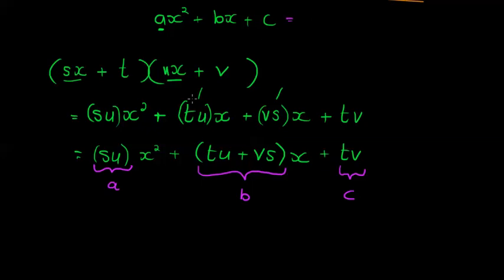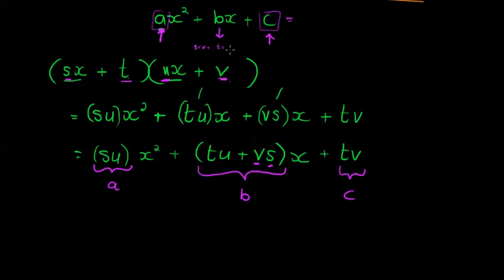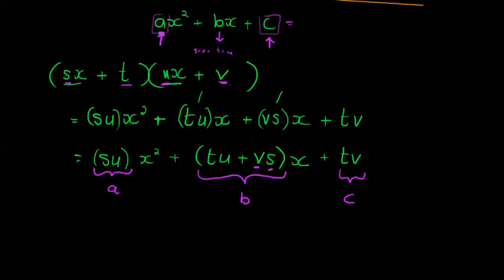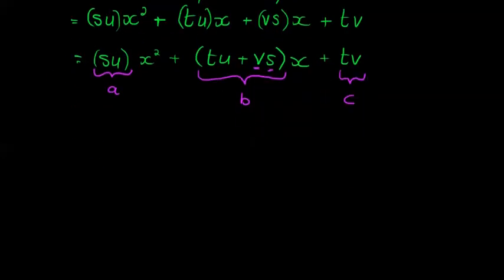What we're trying to do is write this into two brackets, where t and v are the factors of c, and s times u gives me a. But how do I choose which factors to use? The defining characteristic is that t·u plus v·s — one factor crossed with the other — when I add those two products together, I should get b. It's b equals s·v plus t·u, which is quite complicated to work out in your head.